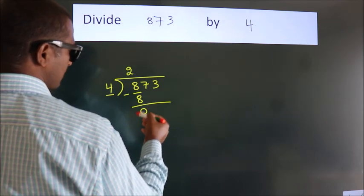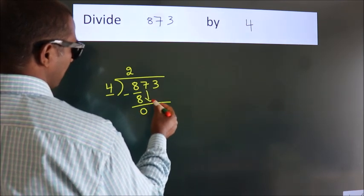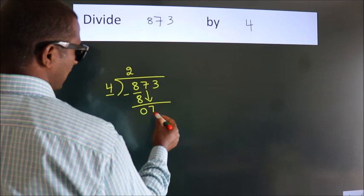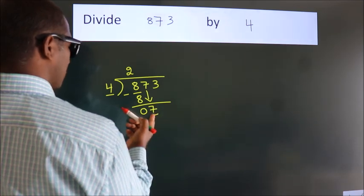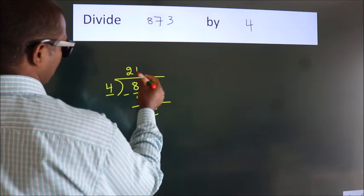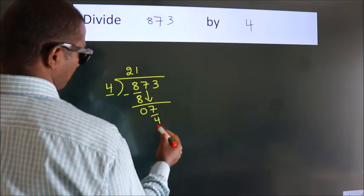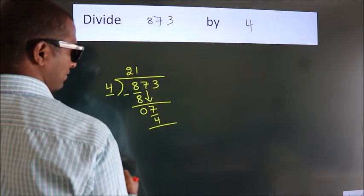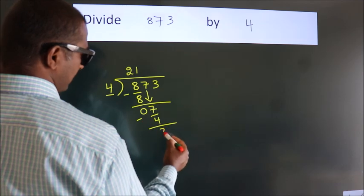After this, bring down the beside number. So, 7 down. So, 7. A number close to 7 in 4 table is 4 once 4. Now, we subtract. We get 3.